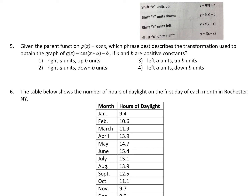Number five is dealing with shifting a function. I just put our basic shifts up here. If you add a number to the end of a function, it shifts it up. If you subtract a number from the end of a function, it shifts it down. If you add a number within a function, it shifts it to the left. And if you subtract a number within a function, it moves it to the right.